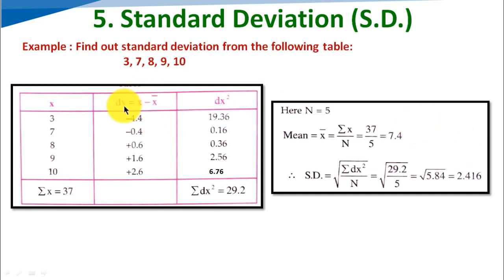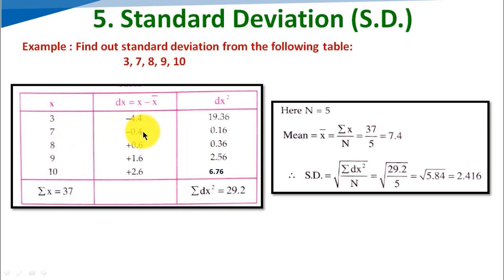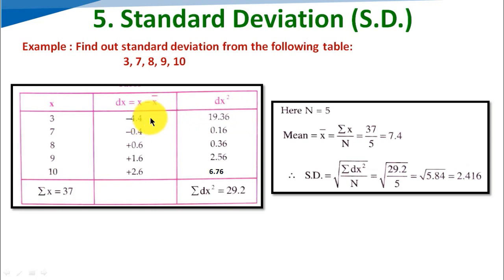To find the deviation dx = x minus x-bar: 3 minus 7.4 gives minus 4.4; 7 minus 7.4 gives minus 0.4; 8 minus 7.4 and likewise up to 10. Then we calculate dx squared: minus 4.4 times minus 4.4 equals 19.36. Since minus times minus gives plus, the sign becomes positive. We calculate dx squared for all values and find sigma dx squared equals 29.2.